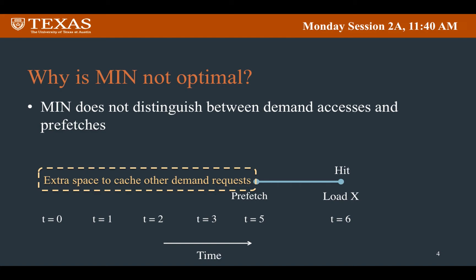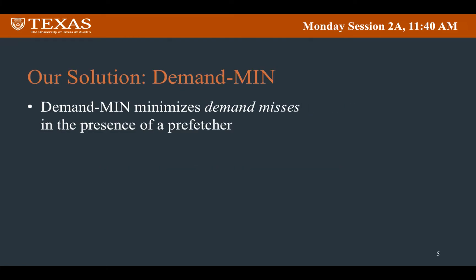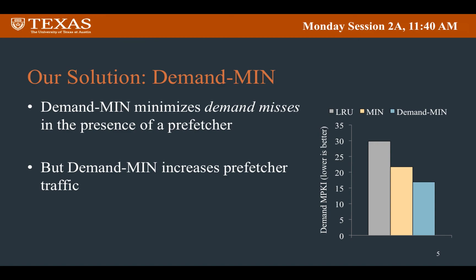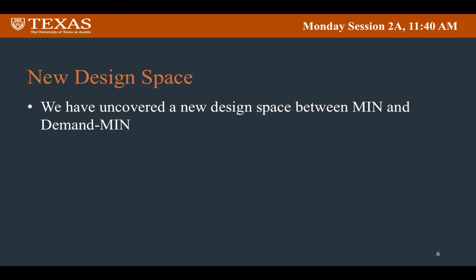So how important is this limitation of MIN? To answer this, we present a new algorithm called demand-MIN, which minimizes demand misses, not the total number of misses. The graph on the right here shows that for SPEC 2006 benchmarks, demand-MIN can reduce demand miss rate by 22% compared to MIN, which is pretty significant. But it's not all that simple because demand-MIN also increases prefetcher traffic. So sometimes MIN is preferable and other times demand-MIN is preferable. We find that there is a whole new design space between MIN and demand-MIN that has not been explored yet.